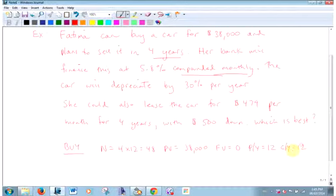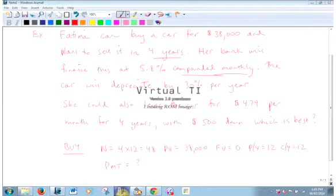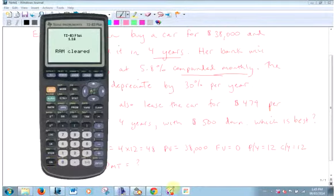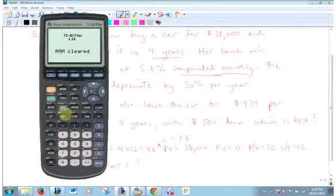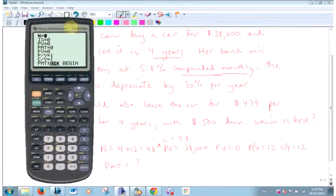How many payments per year? Monthly, 12. And compounding per year, that's monthly too. All right, so what don't we know? Payment. Future value is nothing, payments per year is 12, compounding is also 12. This is a loan, that's typical. What's my payment? Whoa, who can afford that?